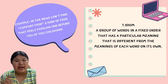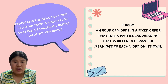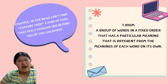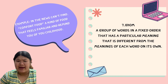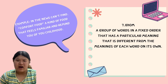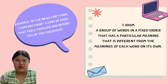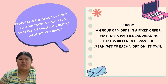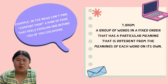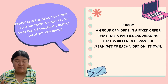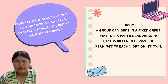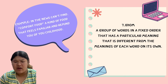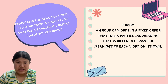Seven: idiom — a group of words in a fixed order that has a particular meaning different from the meaning of each word on its own. Example: 'comfort food' — a kind of food that feels very comforting and reminds you of your childhood.